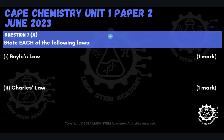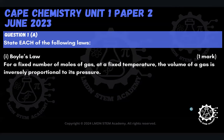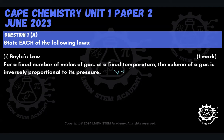The first question is asking us to state each of the following laws — Boyle's Law and Charles' Law. Boyle's Law states that for a fixed number of moles of gas at a fixed temperature, the volume of a gas is inversely proportional to its pressure. We would write this as V is proportional to 1 over P. When applying Boyle's Law, we write P1V1 is equal to P2V2.